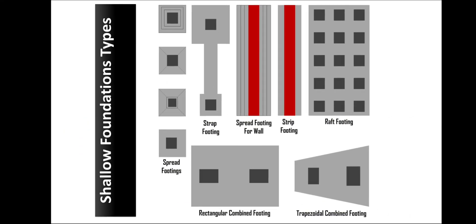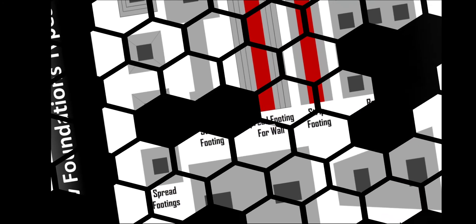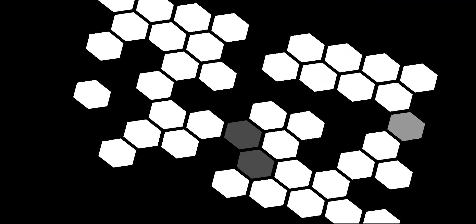These were the classifications of foundation. In the next lecture, we will look at various shallow foundation types shown in the diagram, including spread footing, strap footing, strip footing for walls, raft or mat footing, rectangular combined footing, and trapezoidal combined footing. That was all for the introductory part of foundation — see you in the next lecture.